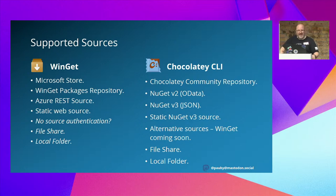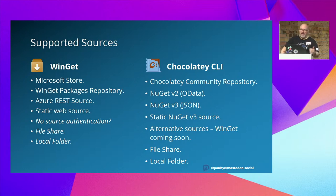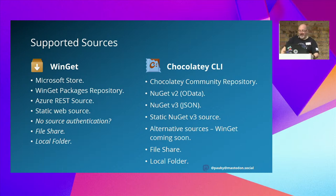There is no source authentication in Winget as far as I can see — I've put that in italics because maybe I've missed it, and it would be a fundamental thing. Winget is quite an early tool — it's three and a bit years old and they're still adding to it. So if you need authenticated feeds for your packages, you might need to look somewhere else or wrap additional permissions and security around it. I've also put file sharing and local folder in italics — Winget will be able to install a package manifest from a folder, but you can't point it to a folder of all your manifests and have it install them. And Winget, last I checked, didn't support UNC paths, so your file share would need to be a mapped drive.